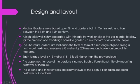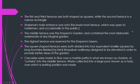Each terrace level is 4 to 5 meters — 13 to 15 feet — higher than the previous level. The uppermost terrace of the gardens is named Bagh-e-Farah Bakhsh, literally meaning 'bestower of joy.' The second and third terraces are jointly known as Bagh-e-Farah Bakhsh, meaning 'bestower of goodness.' The first and third terraces are both shaped as squares while the second terrace is a narrow rectangle. The Shalimar's main entrance was on the lowermost terrace, which was open to noblemen and open to the public.